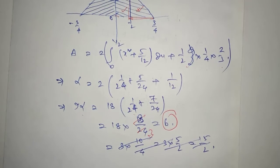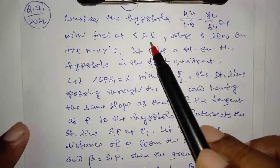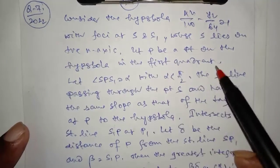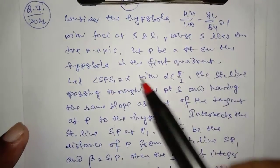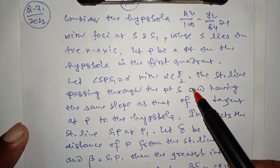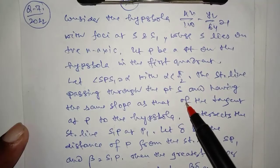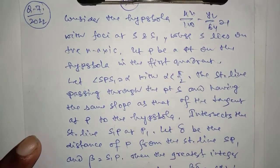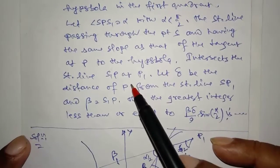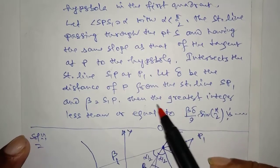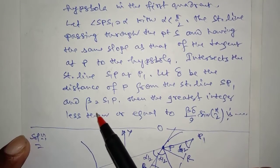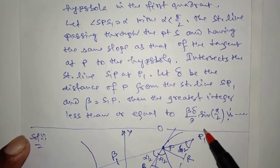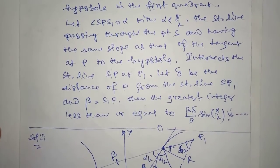Question 8: The hyperbola has foci at S and S₁ where S lies on the positive x-axis. Let P be a point on the hyperbola in the first quadrant, with angle ∠SS₁ = α where α < π/2. A straight line through S has the same slope as the tangent at P to the hyperbola, intersecting line S₁P at P₁. Let δ be the distance of P from line SP₁, and β = S₁P. Find the greatest integer less than or equal to β·δ/(9·sin(α/2)).